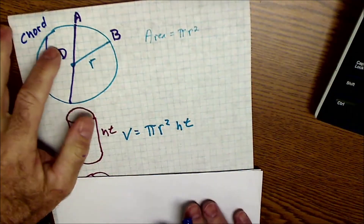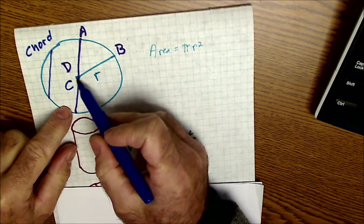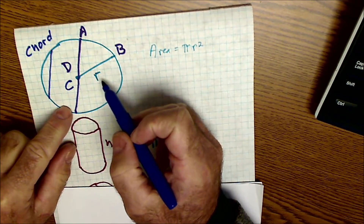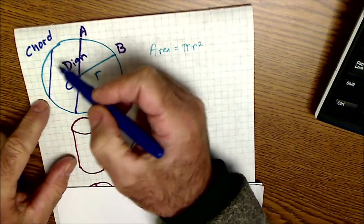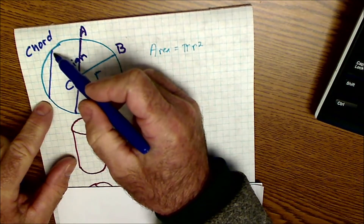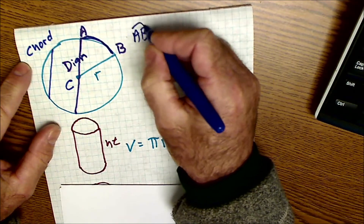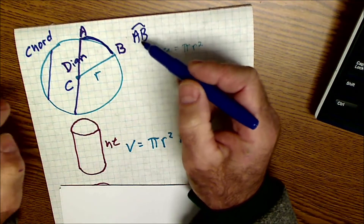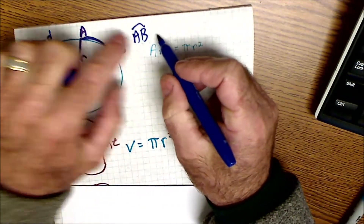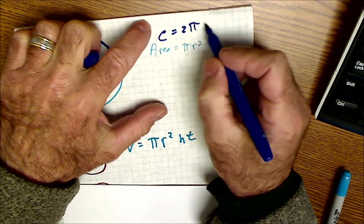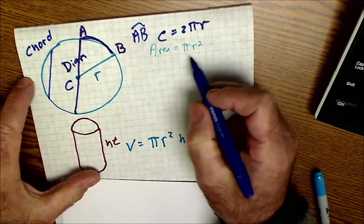Let's start with just a circle, centered at point C. That's the center of the circle. From the center to the outside is a radius, represented with the lowercase r. All the way across the circle through the center is the diameter. A chord goes from one side of the circle to the other without going through the center. This right here is called an arc of a circle — that would be arc AB. You can find the measure of the arc or the length of the arc. The measure would be an angle and the length would be the portion of the circumference you're talking about.